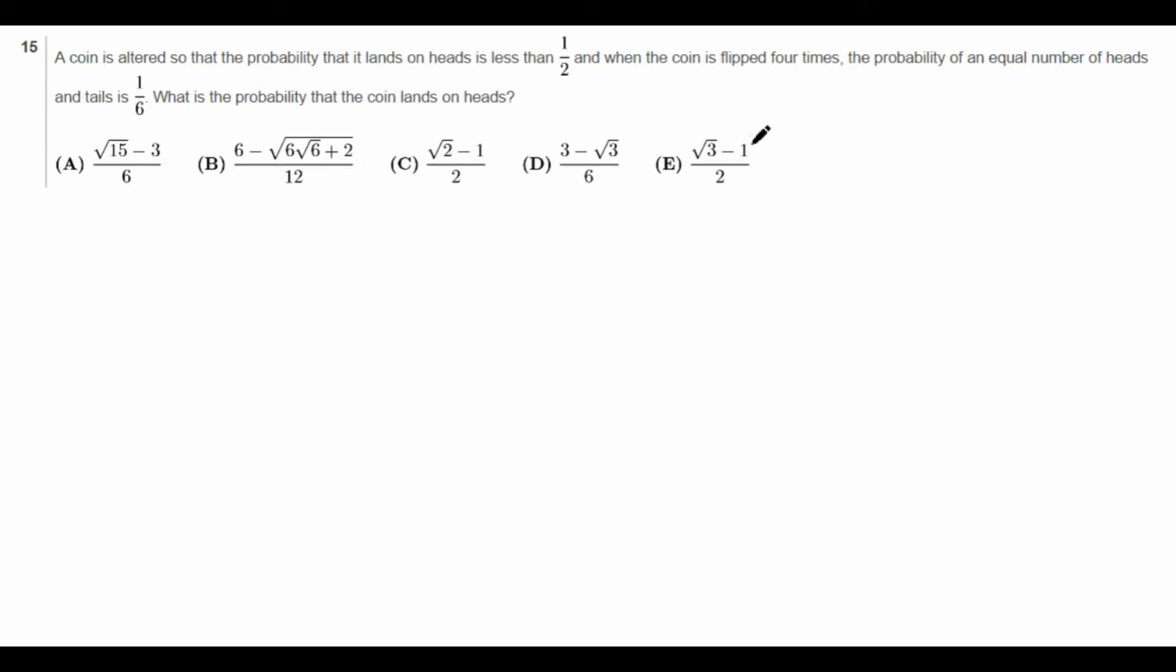So how in the world might we solve this? Well, we want the probability that the coin lands on heads, so let's just let that probability be P for now. So P is equal to the probability head, and I'll denote that by H. So that means the probability of tails would be naturally one minus P, because if it's not heads, then it must be tails.